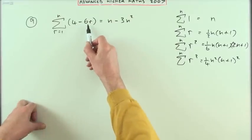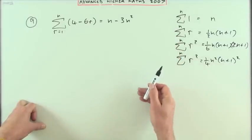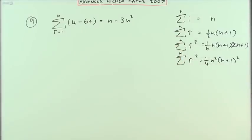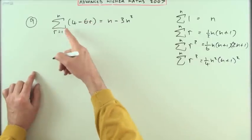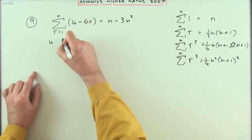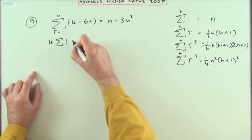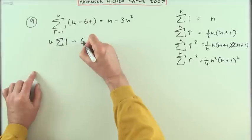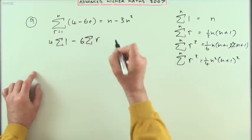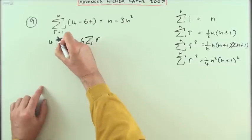So what we've got, the sum of four, that's the same as four lots of the sum of one, minus the sum of six r. That's like six lots of the sum of r. I'll put in those parts again.